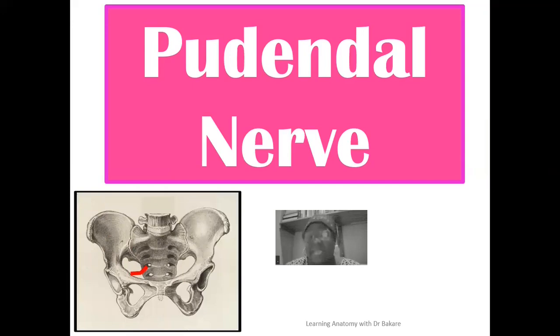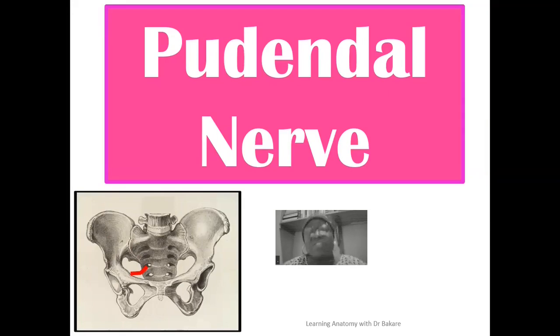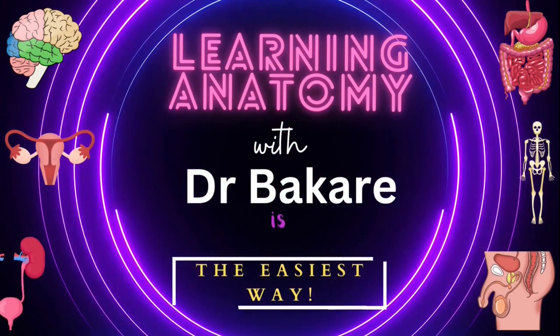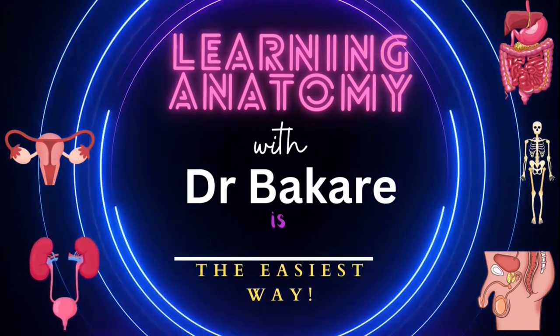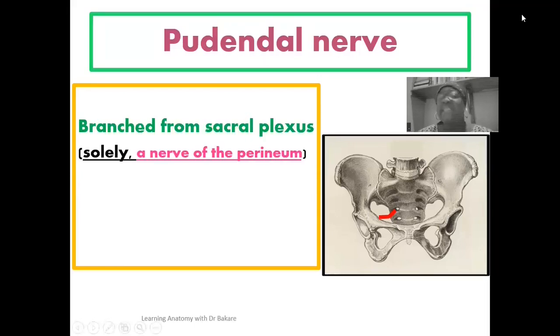You have a number of branches emerging from the pudendal nerve, giving off supply to different structures within the perineal region. The pudendal nerve is formed from the sacral plexus and it seems to provide the sole innervation of the perineum.